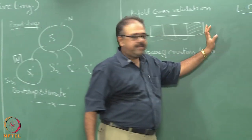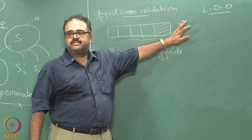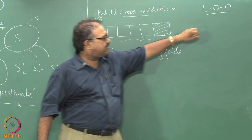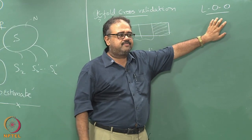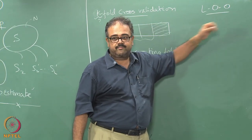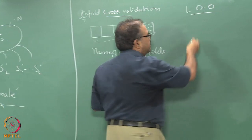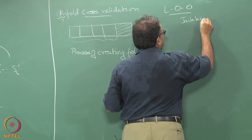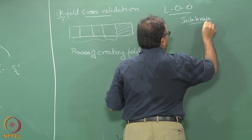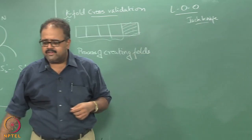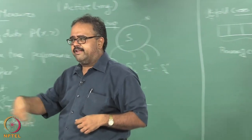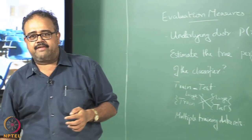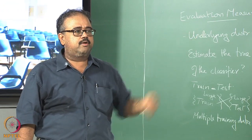Leave-one-out essentially means you train on N minus 1 data points and test on one data point. In some cases this actually gives good estimates. An early version of this variance reduction technique for parameter estimation was called the jackknife, which is very similar to leave-one-out.